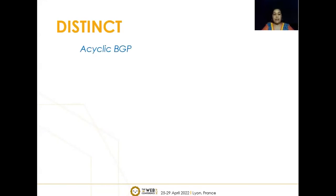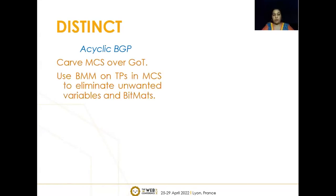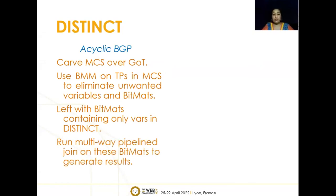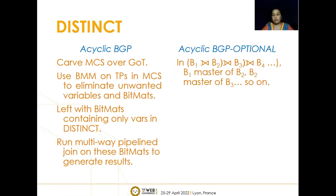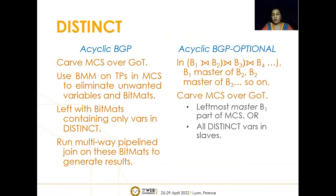For acyclic BGPs, we carve out an MCS over the graph of triple patterns and use Boolean matrix multiplication on triple patterns in MCS to eliminate unwanted variables and bitmaps. We are then left with bitmaps containing only the variables in the distinct clause and can run multi-way pipeline joins without explicit deduplication. For acyclic BGP optional queries — represented as B1 left outer join B2 left outer join B3 and so forth, where B1 is the leftmost master — we can also carve out an MCS. There are two cases: either B1 is part of MCS, or all distinct variables are in the slaves. Boolean matrix multiplication can only be used if B1 is part of MCS.